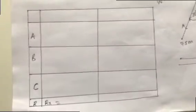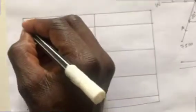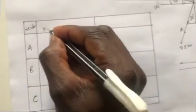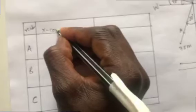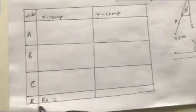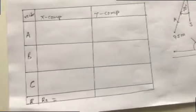This is the table we are going to use. We have each vector, its x-component, and its y-component. We put all these vectors into this table, and then we find the resultant in x as well as the resultant in y.